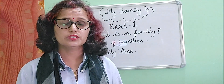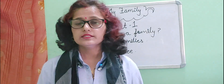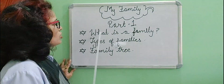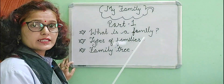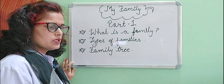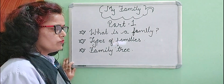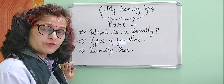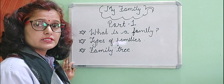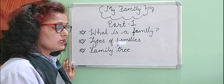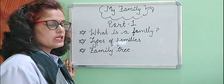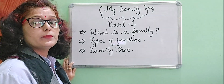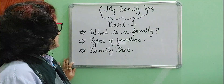Today we are going to discuss Part 1. In this part, we will cover three sub-topics. First of all, what is a family? We love the people who share our home with us — like father, mother, brother, sister, grandparents, uncle, aunt. People living in a house together make a family.